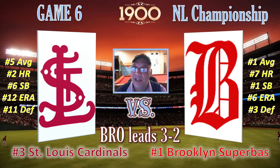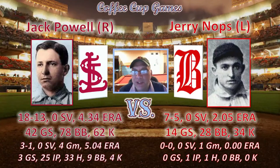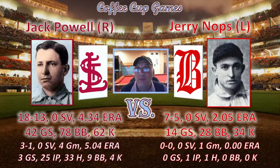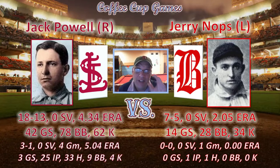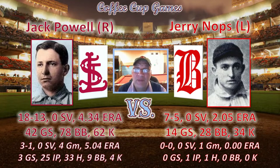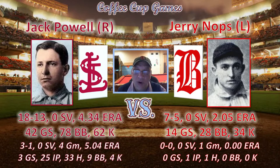Brooklyn leads the series three games to two and is undefeated at home. On the mound for St. Louis, right-hander Jack Powell, who went 18 and 13 with a 4.34 ERA during the regular season, with 42 games started. In the postseason he is three and one with a 5.04 ERA. For Brooklyn, a surprise start as they send southpaw Jerry Knops, who went seven and five with a 2.05 ERA in the regular season but has only pitched one inning in the postseason.